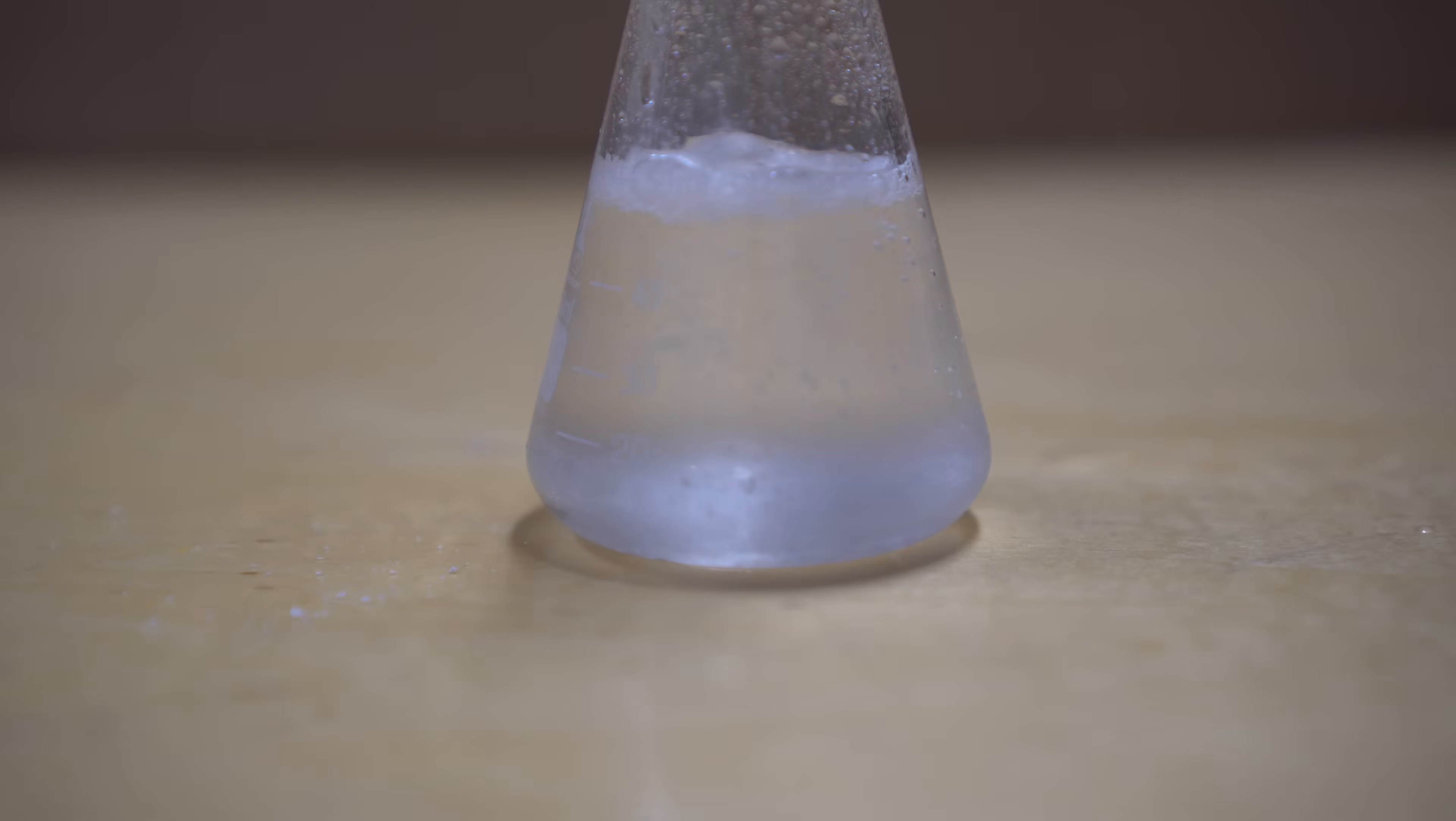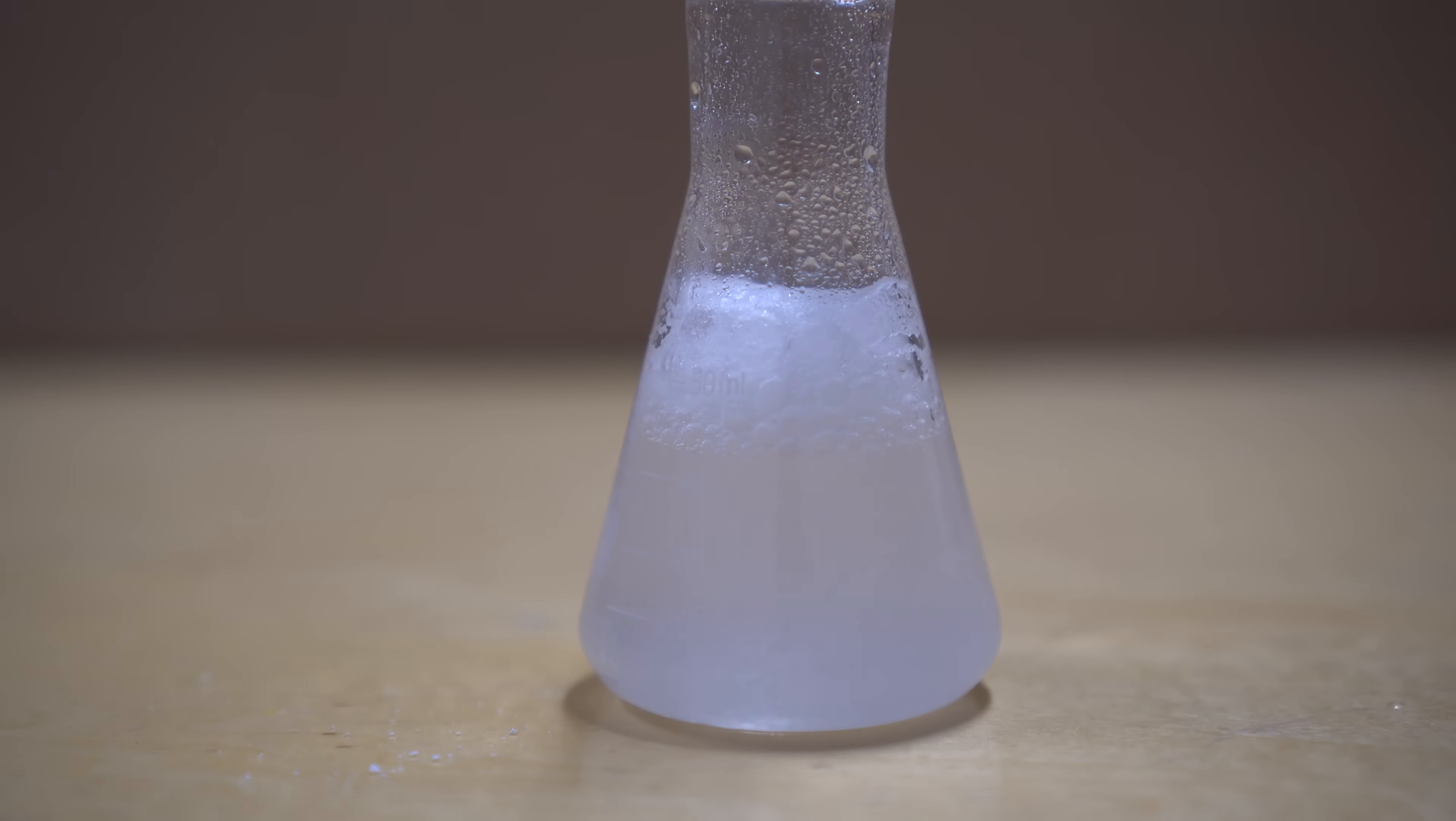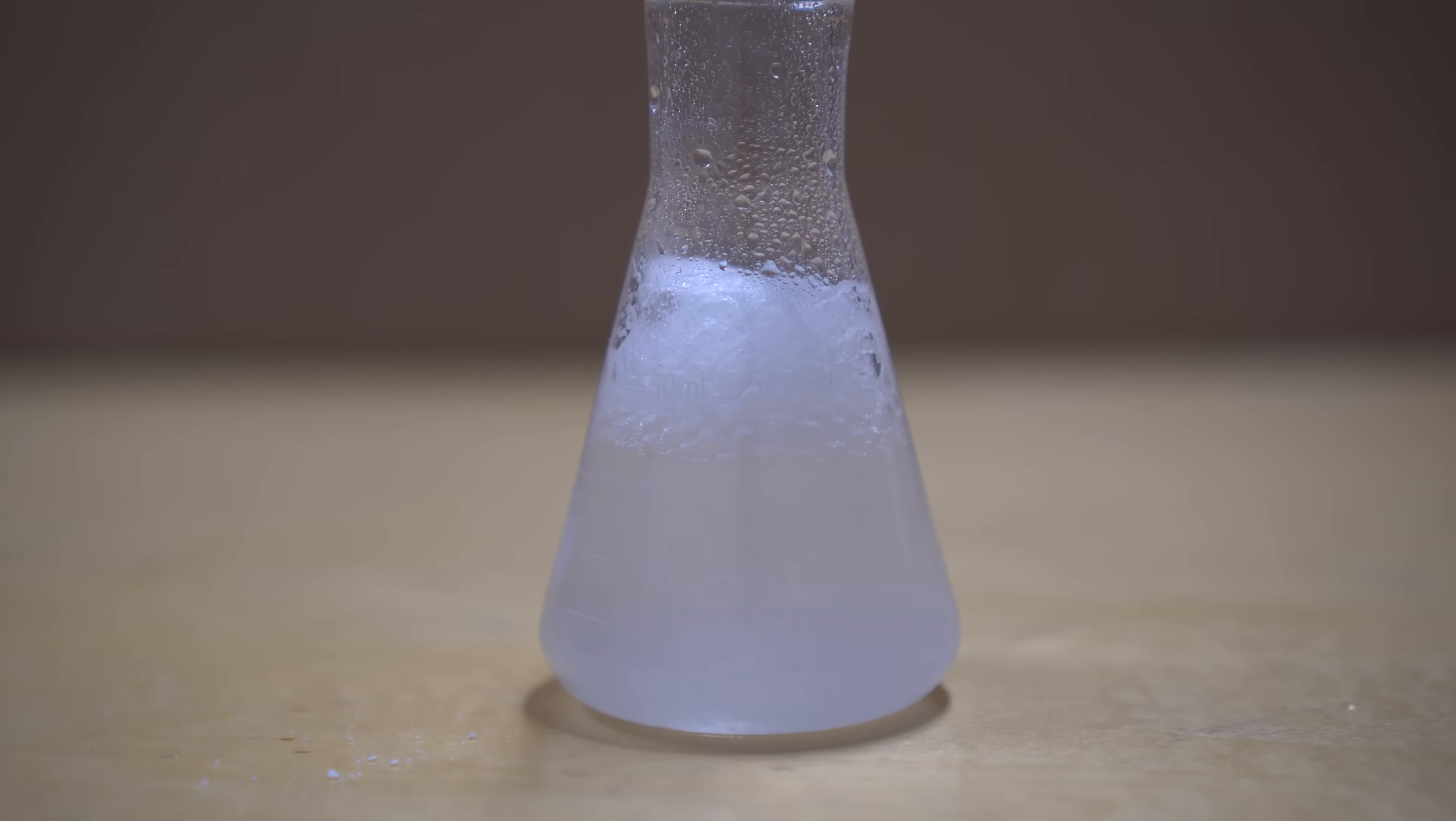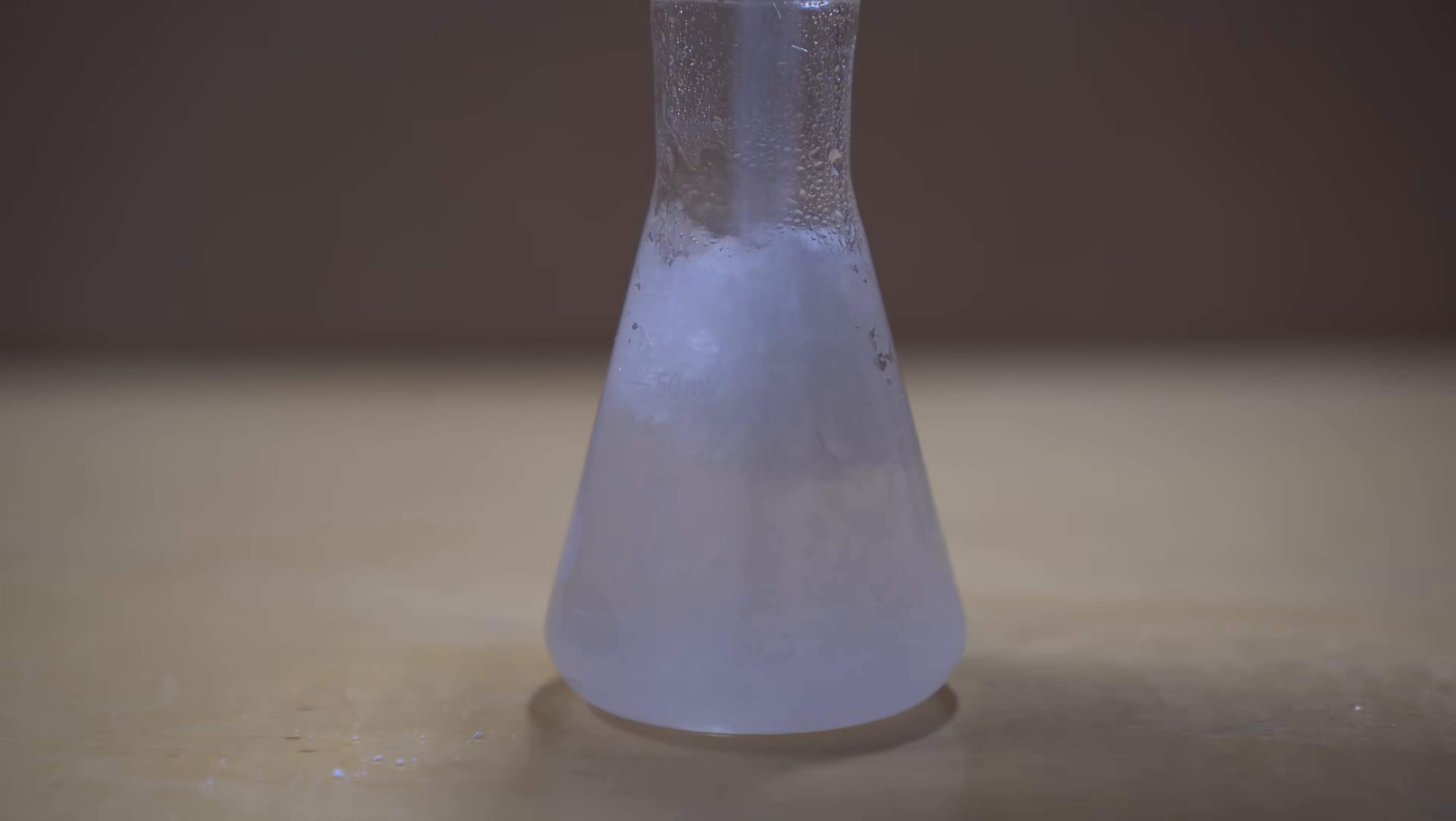After I kept adding more and more acid, it slowly started to turn into a cloudy solution. Now the only problem was I kept getting these bubbles and this weird froth. Whenever I mixed it, it would not go into the solution and it kept bubbling out. Now it could have been CO2, it could have been something different, I'm not exactly sure, but I know that it would not mix with the solution.